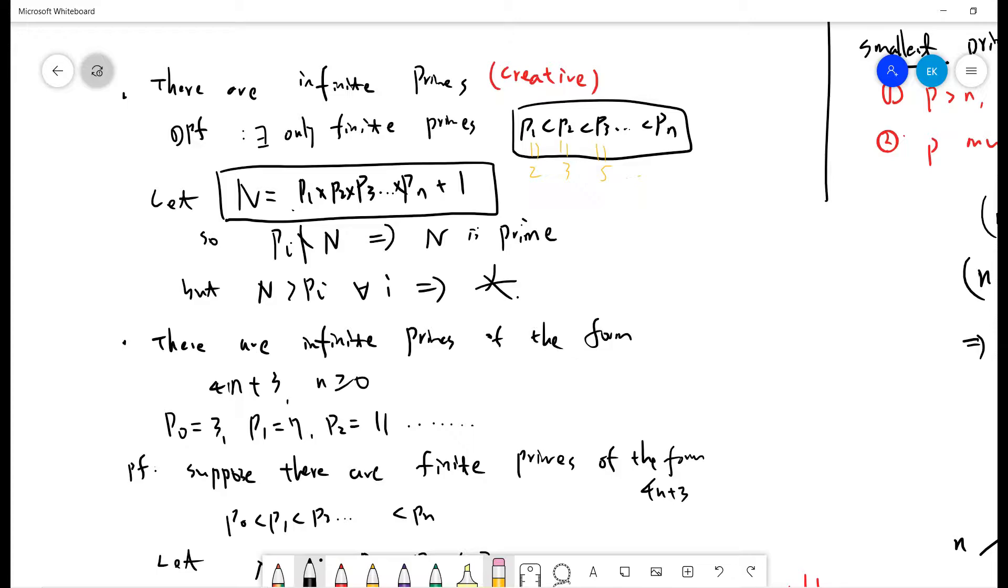So let capital N equal p1 times p2 times p3 up to pn plus 1. So you see, for each i, pi does not divide N, because N divided by pi will have remainder 1. So that means N is prime, but we know that N must be larger than pn. So contradiction.